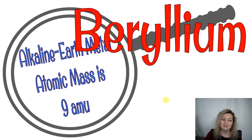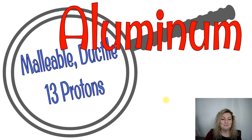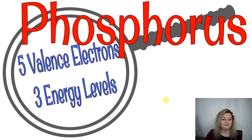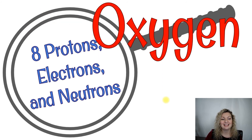An alkaline earth metal with an atomic mass of 9 amu — that's beryllium. Malleable, ductile, and 13 protons — that's aluminum. A yellow-greenish gas that's also a halogen — that's chlorine. Five valence electrons and three energy levels — that's phosphorus. Eight protons, electrons, and neutrons — that is oxygen.